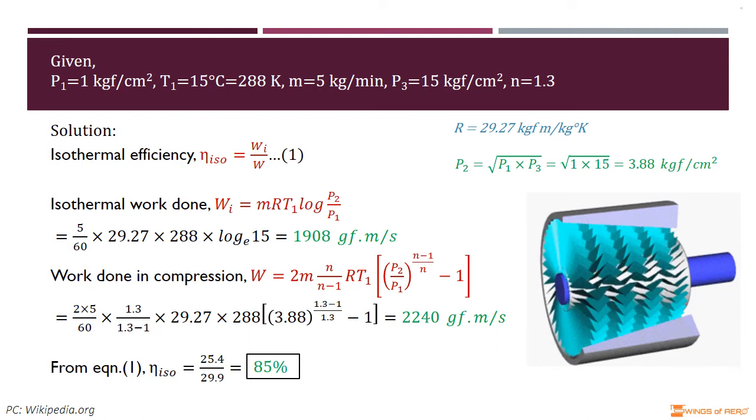We get work done W = 2240 gf·m/s. Now, dividing isothermal work done W_I by work done in compression W, we get the required isothermal efficiency is 85%.